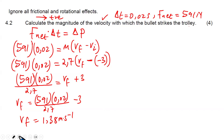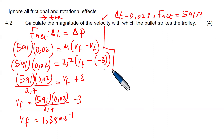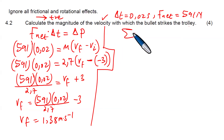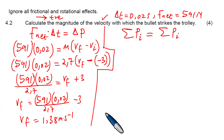We are interested in calculating the magnitude of the velocity with which the bullet strikes the trolley. We will use the formula for conservation of momentum: the sum of all momentum before collision equals the sum of all momentum after collision.